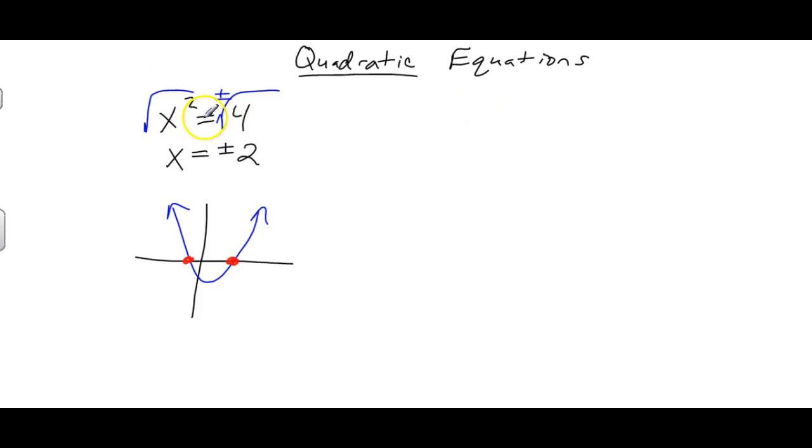So what if it was just a little bit harder? You get x plus 1 squared equals 4. To solve something like that, you take a very similar approach. You can take the square root of both sides, don't forget plus or minus, and you get x plus 1 equals plus or minus 2.